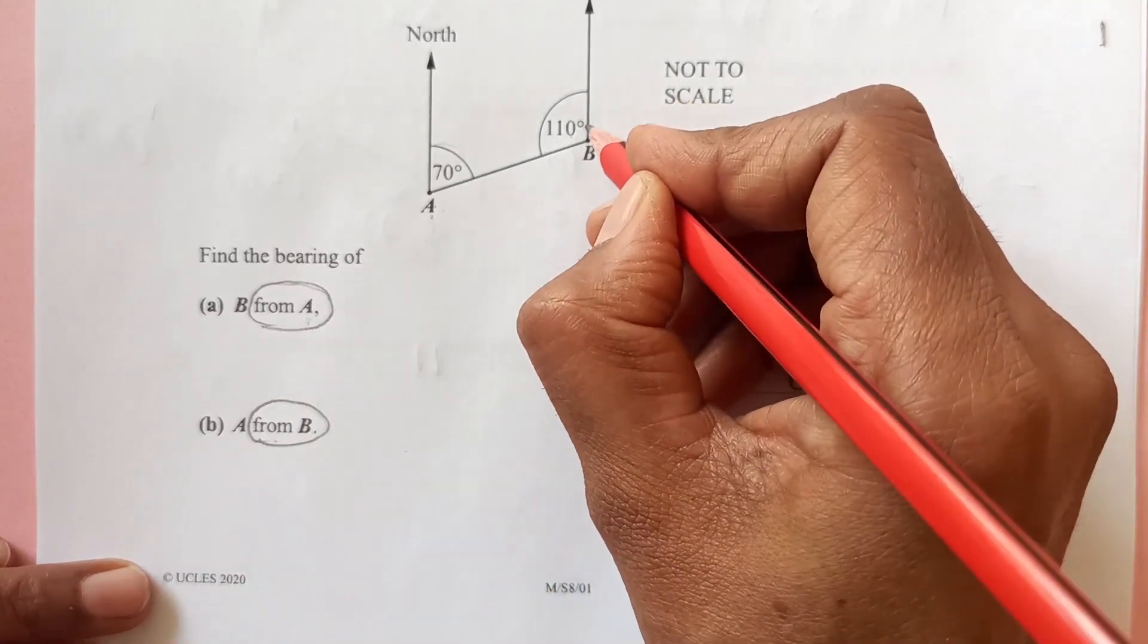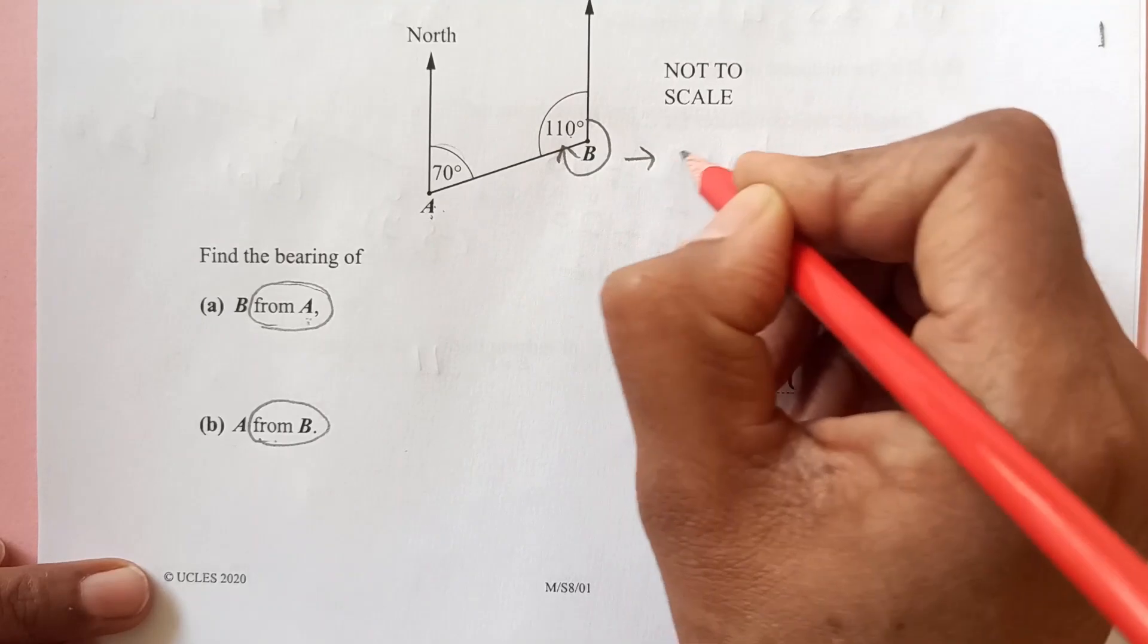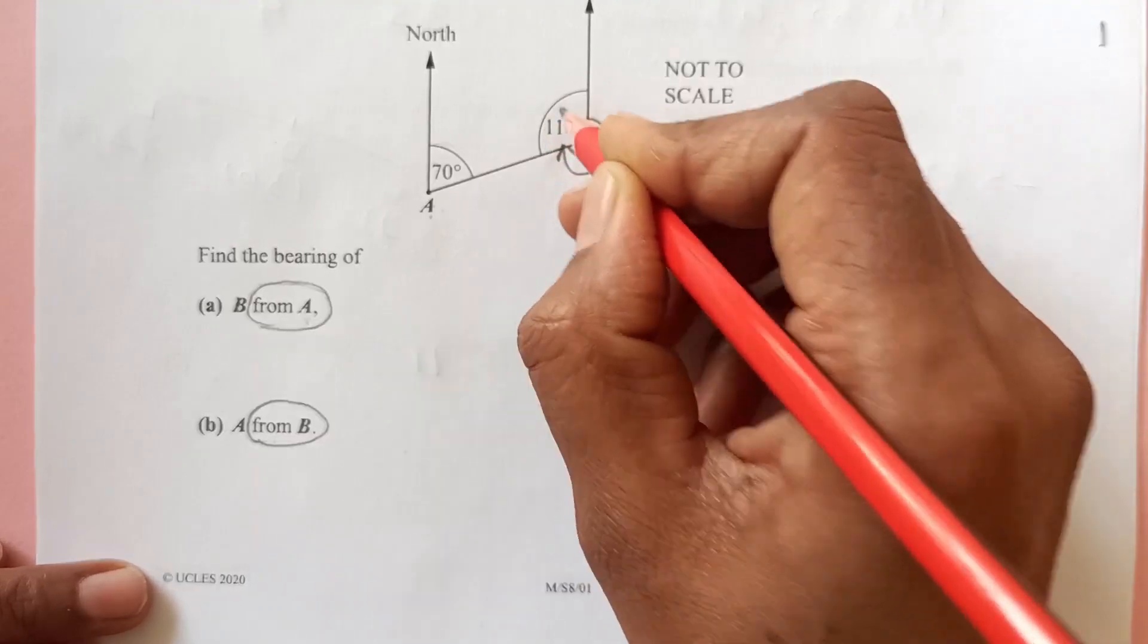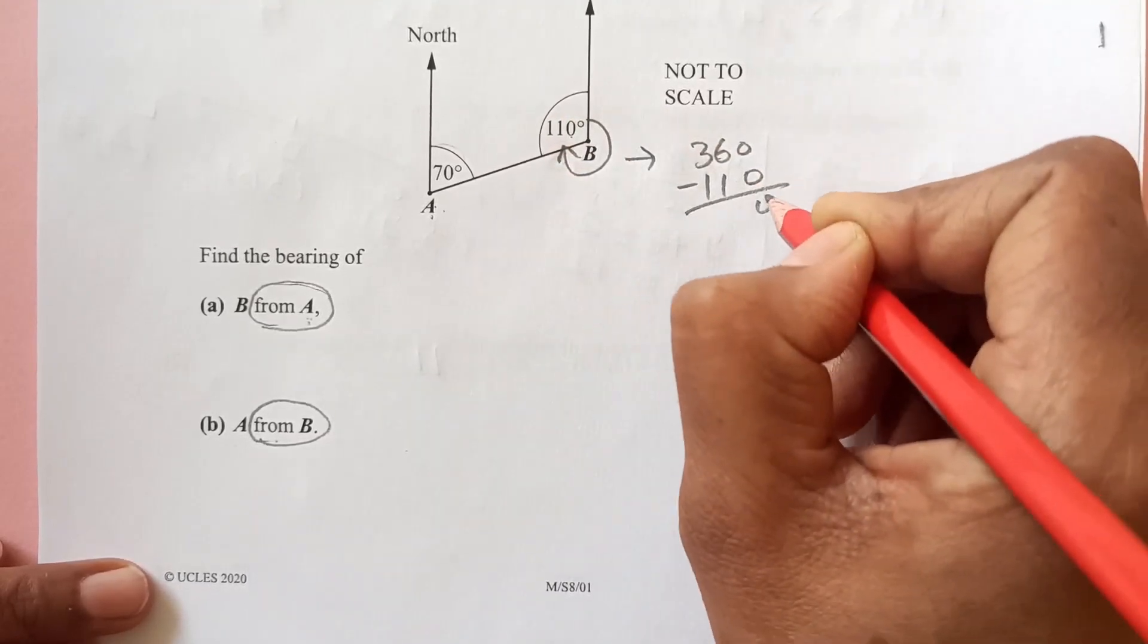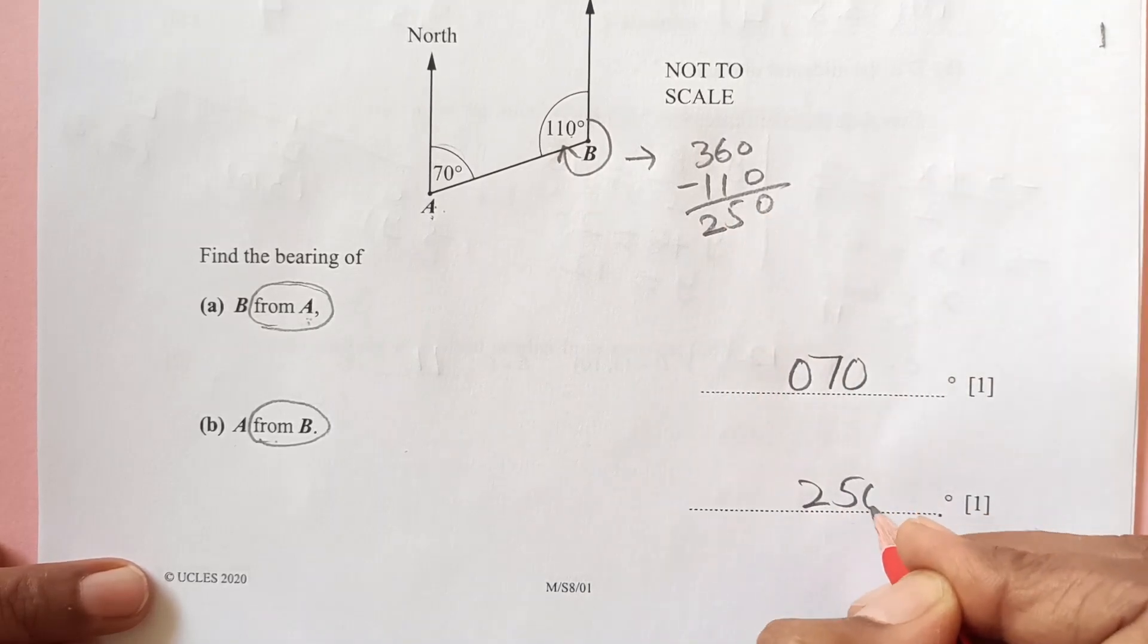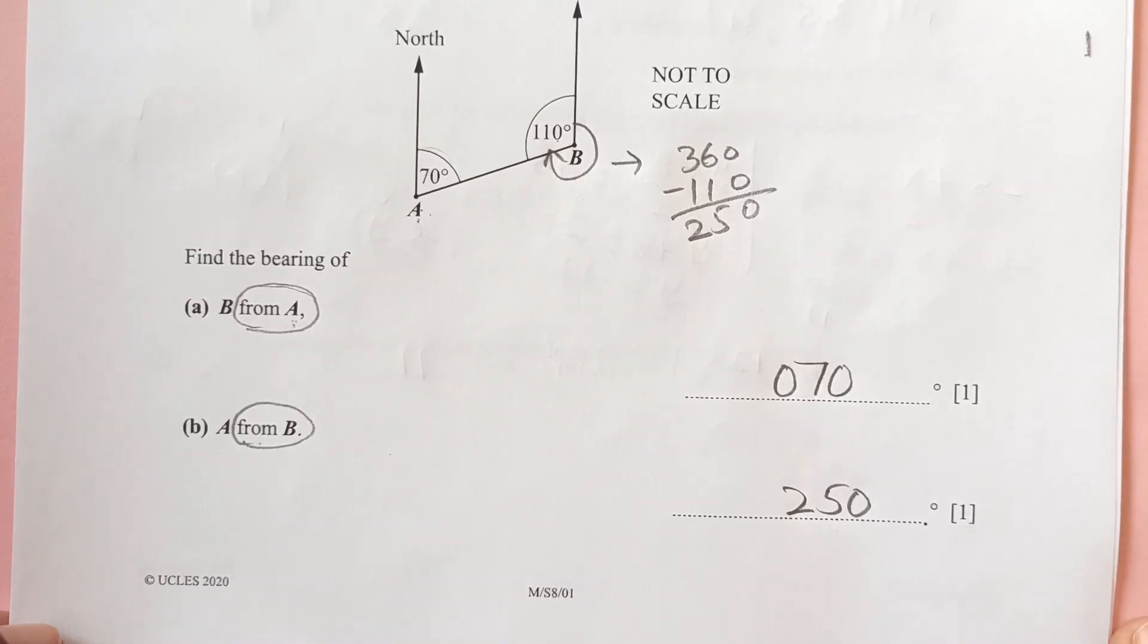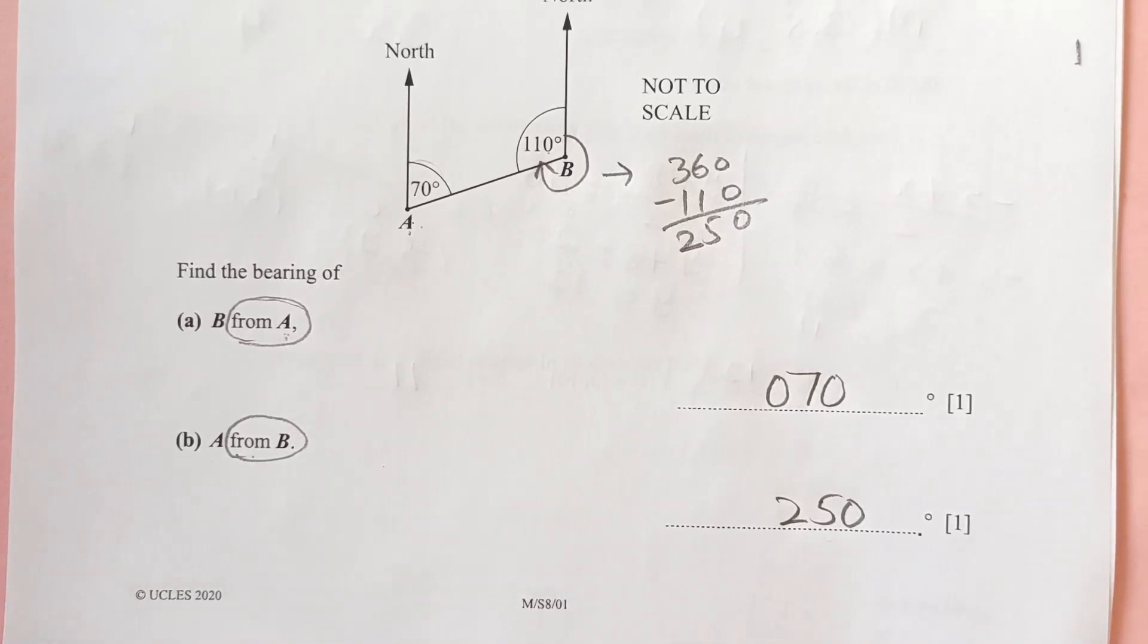Second, A from B: now we are looking from B, so from B means here, to the line. So this is going to be 360 minus this 110, so 250. So 250 is the final answer for this one. That's it for this video, I hope you guys understood. Please like, share, and subscribe. See you guys in the next video, God bless you.